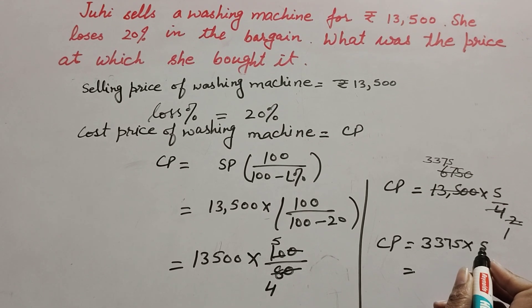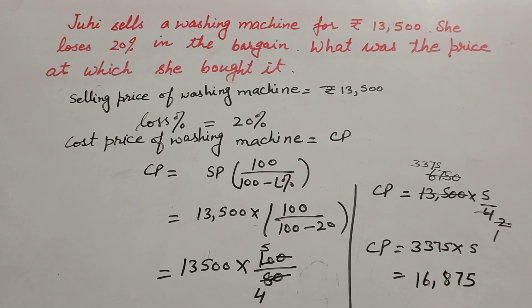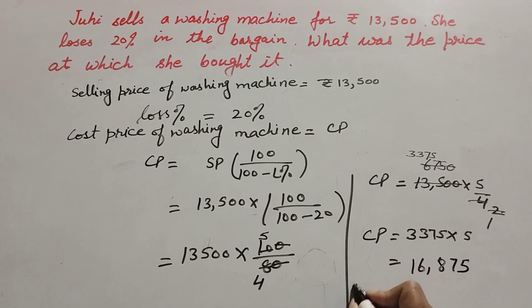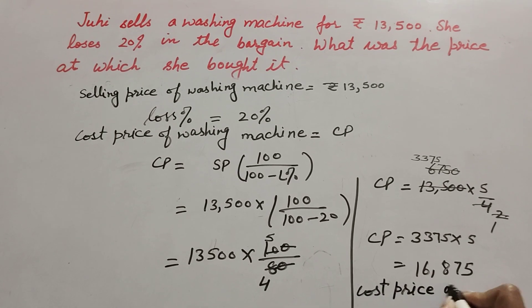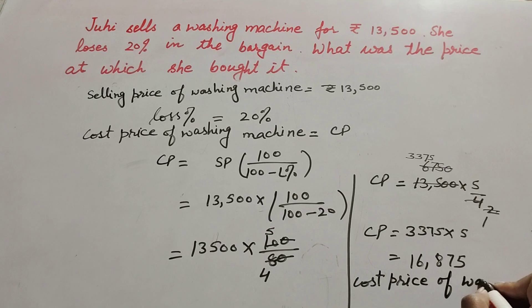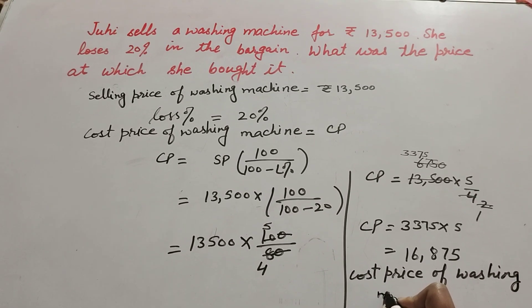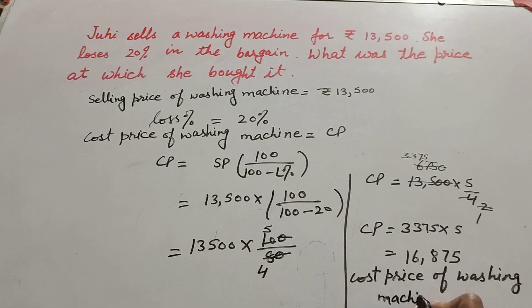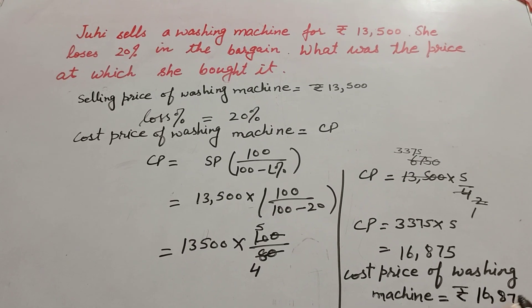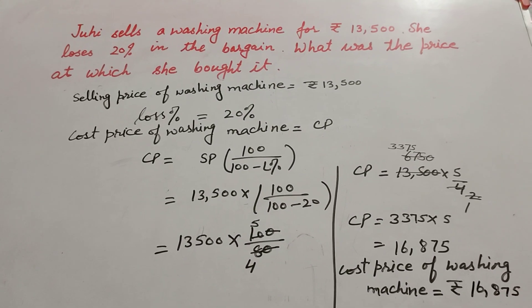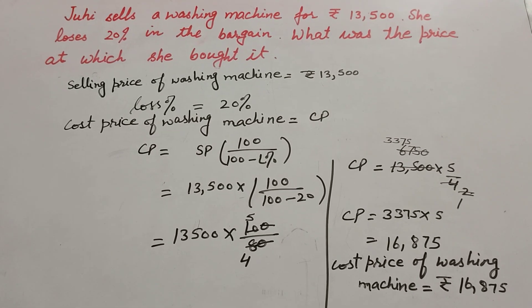So the cost price is equal to 3,375 multiplied by 5, which equals 16,875. Therefore, the cost price of the washing machine is equal to rupees 16,875.